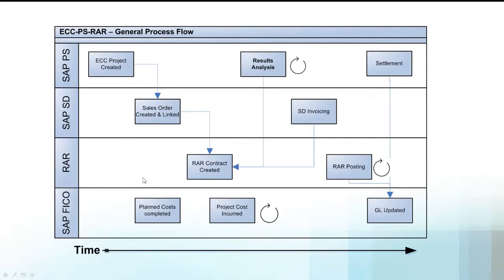A couple of things I need in advance for everything to fly correctly: I need to make sure I use plan costs, and then project costs are your normal charging to the WBS. When I finally run results analysis with the new key, RAR looks to update any related RAR contract because of the results analysis. Invoicing and billing still occurs pretty much as you're doing it today — there's really no change. What RAR is managing for you is the recognition of revenue based on percentage of completion. Finally, upon settlement, any remaining revenue that wasn't accounted for based on results analysis flows into the revenue stream.